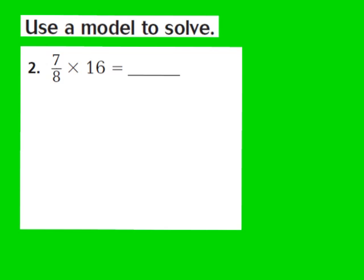Now let's take a look at question number 2. Question 2 says use a model to solve. For number 2, they give us the fraction 7/8ths and we're going to multiply that by the whole number 16. In order to use a model to solve this problem, we first have to identify the denominator in our given fraction. In the fraction 7/8ths, the denominator is an 8. So I'm going to divide the whole number 16 into 8 equal groups.